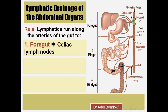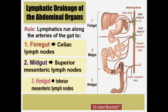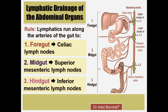Regarding the midgut, lymphatics drain along branches of the superior mesenteric artery to the superior mesenteric lymph nodes. The parts of the midgut are: the lower half of the duodenum, jejunum, ileum, appendix, cecum, ascending colon, and the right two-thirds of the transverse colon. Regarding the hindgut, lymphatics follow branches of the inferior mesenteric artery to the inferior mesenteric lymph nodes.